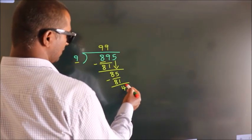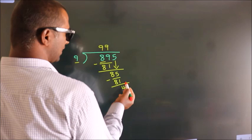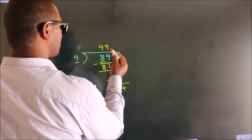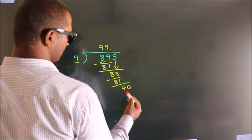After this, no more numbers to bring it down. So what we do is, we put dot take 0, so 40.